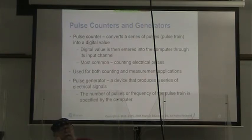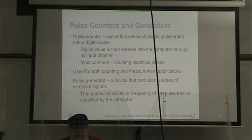Our pulse counters and generators. A pulse counter converts that series of pulses, which we call a pulse train, into a digital value. That digital value is entered into the computer through its input channel. The most common way of doing this is counting electrical pulses. We can use this for measurement or counting applications. And then our pulse generator is just a device that produces a series of electrical signals. In that case, the number of pulses, or the frequency of the pulse train, is specified by the computer.